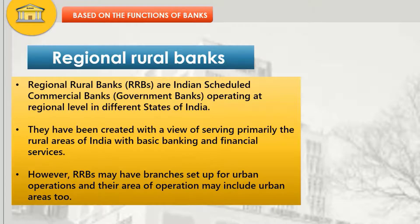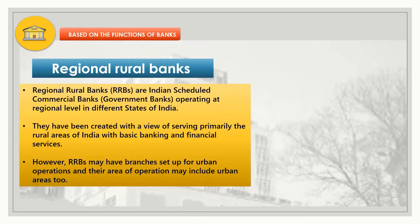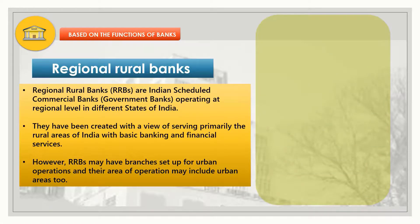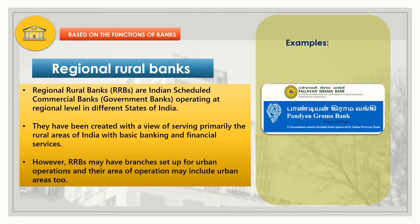Regional Rural Banks (RRBs) are Indian scheduled commercial banks — governmental banks operating at regional level in different states of India. They have been created with a view of serving primarily the rural areas of India with basic banking and financial services. However, RRBs may have branches set up for urban operations and their area of operations may include urban areas too. Example: Pandyan Grama Bank.